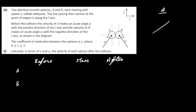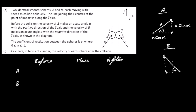Looking at sphere A: it moves at speed U at angle alpha, so resolving into components gives the i-component as U cos(α) and the j-component as U sin(α). For sphere B moving in the opposite direction at angle alpha: its i-component is -U cos(α) and j-component is U sin(α). So before impact, A has velocity U cos(α) i + U sin(α) j.